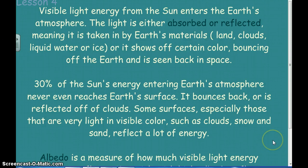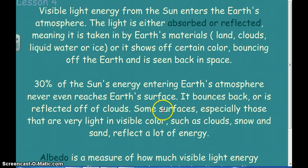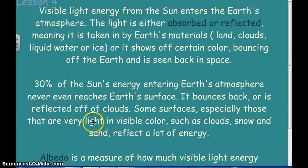As far as visible light coming in — that's one of the seven forms of energy the sun provides — it is either absorbed or reflected. Thirty percent of the sun's energy enters the Earth's atmosphere and never reaches the surface of the Earth; it either bounces back or is reflected off the clouds. Some of it gets absorbed into the clouds, and some surfaces, especially those really light in color such as snow, clouds, and sand, reflect a lot of that energy back.